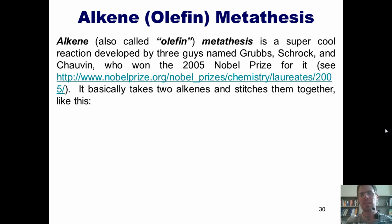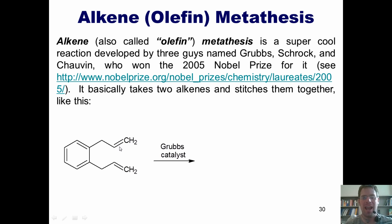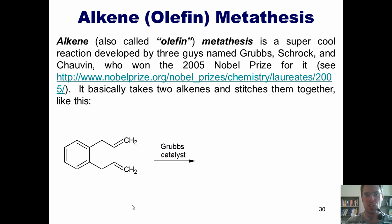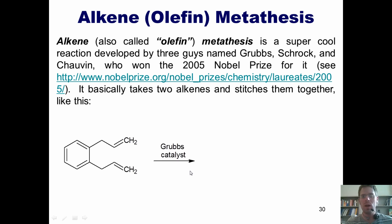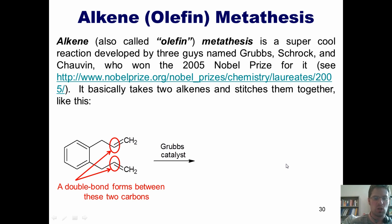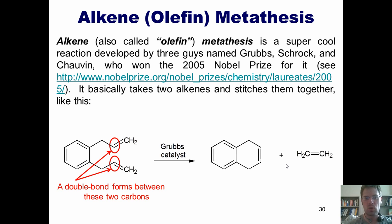What this reaction does is it basically takes two alkenes and stitches them together. As you can see in this molecule, I have two alkenes, one here and one down here. I'm discounting the benzene ring and its double bonds as counting as alkenes, because benzene double bonds don't react the way traditional alkenes do, as we'll discuss in a later chapter. I'm just looking at the alkenes shown up top and down bottom. If I react a molecule like this with an olefin metathesis catalyst, such as a Grubbs catalyst, what the catalyst does is it finds the two internal carbons in the two alkenes, which happen to be these two carbons right here, and then forms a double bond between them, as you can see in this product right here.